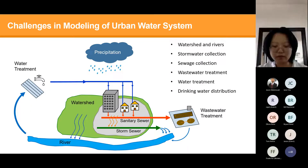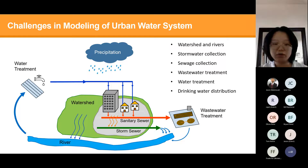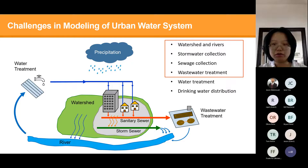You can see there are many aspects and components. When we create a model, there are many challenges. Today we're going to focus on the top four: watershed management and rivers, wetlands, stormwater connection, and wastewater — sewage, wastewater connection, and treatment.